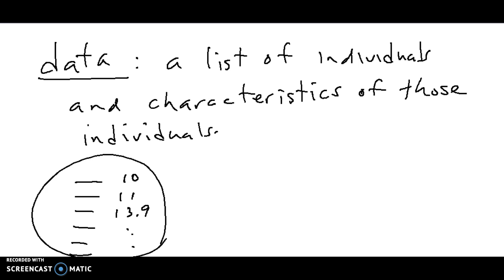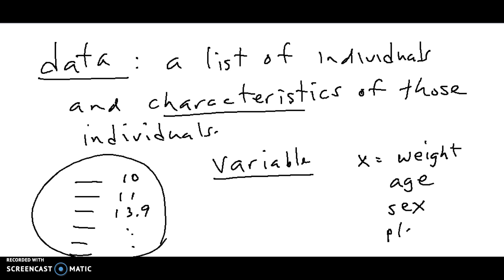Now, usually we don't say characteristics. Instead, we say variables. A variable in statistics is much different than a variable in algebra. In algebra, you have the variable X, which represents some unknown number and some equation that you want to solve or graph or something like that. But in statistics, a variable is any kind of characteristic. So you could have the variable X be weight. You could have the variable be age. It could be sex. It could be place of birth. There's many, many different kinds of variables. Anything you want information about, anything you're interested in, you can call it a variable.